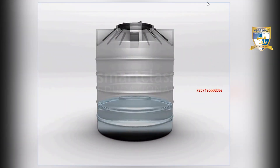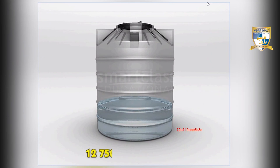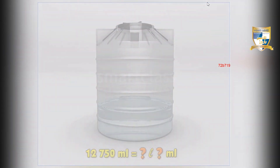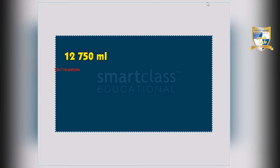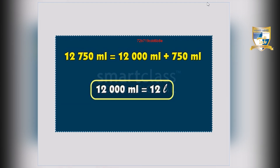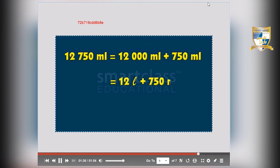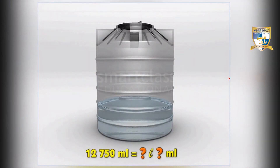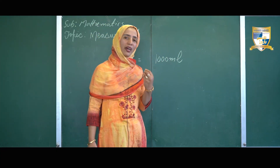Let us try another one. The volume of water in the tank is 12,750 millilitres. What is the volume of the water in the tank in litres and millilitres? First, split 12,750 millilitres into 12,000 millilitres and 750 millilitres. So you get 12 litres plus 750 millilitres, which is 12 litres 750 millilitres. So this was all from my side. Hope you understand today's video very well. We will meet in our next video. Till then, thank you.